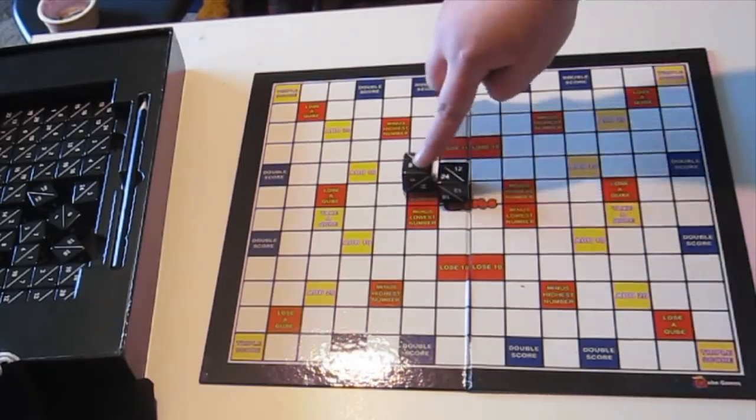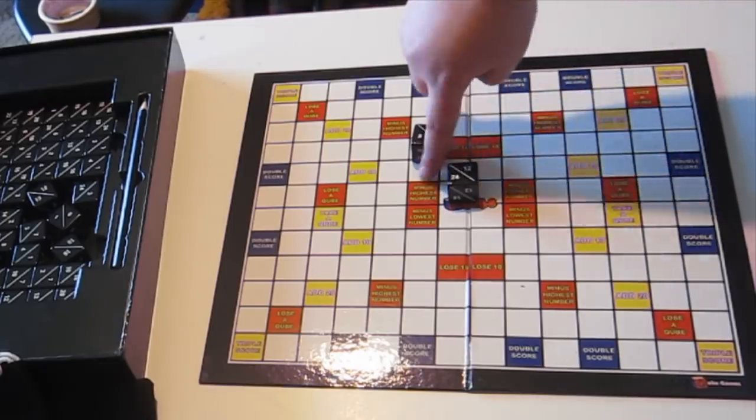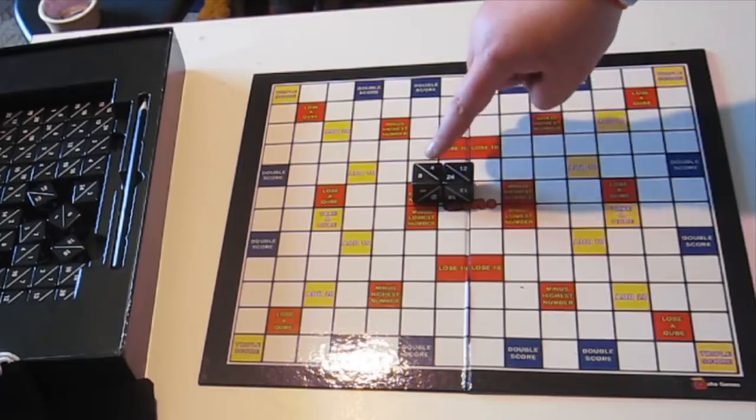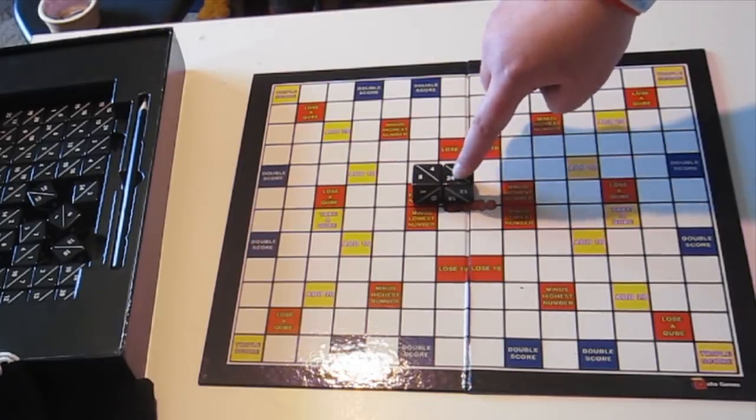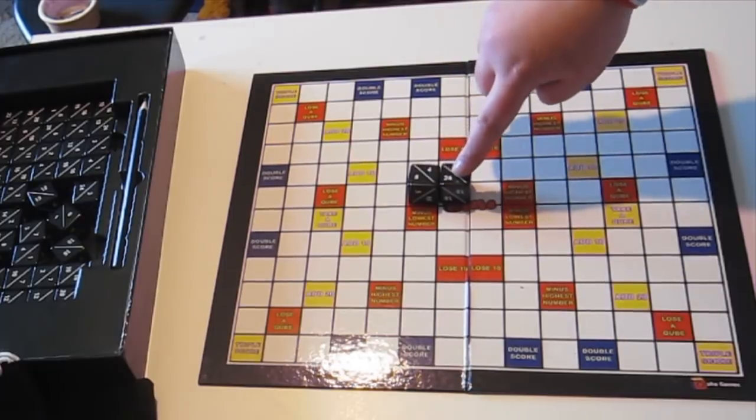So continuing on, these squares here that are colored have little extra rules about them. So this one here says minus highest number, which means that you take the highest number off the match that you've just made, so that would be the 24. So really I got four points for that, which is not much considering I had 28 a minute ago.